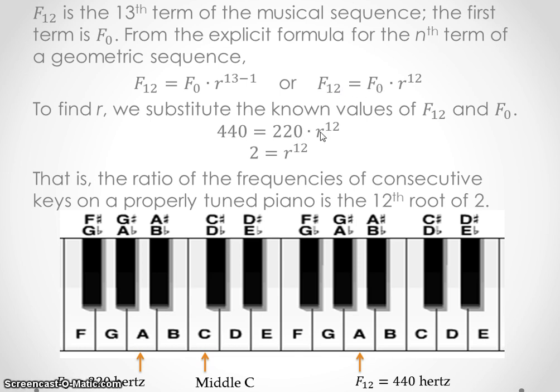So we put those in here right where they belong. So F_12 goes right in here. F_0 goes right in here. And then what we want to do is we want to essentially solve for R. So we divide each side by 220, and we would get 2 on this side. And then, of course, these would just cancel out. So you would have r to the 12th power equals 2. That is the ratio of the frequencies of the consecutive keys on a properly tuned piano is the 12th root of 2.